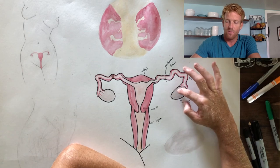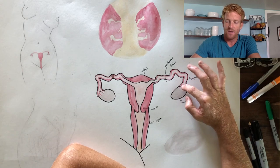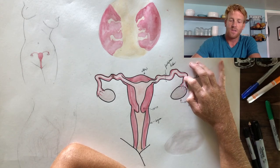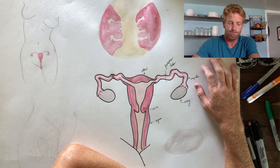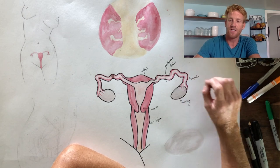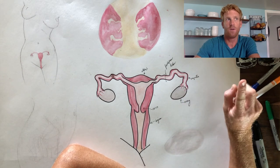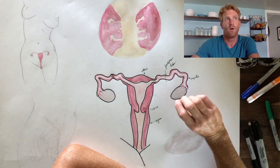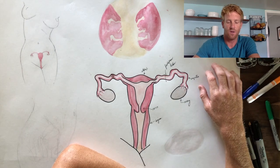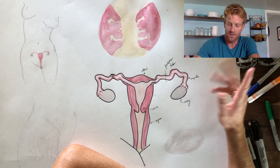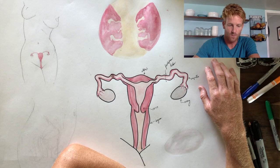Sometimes there will be two eggs released and captured by the fallopian tube. If those two eggs are fertilized, that's when you get fraternal twins. Identical twins occur when, after fertilization of one sperm and one egg, the daughter embryo splits into two — and those develop into two identical twins.